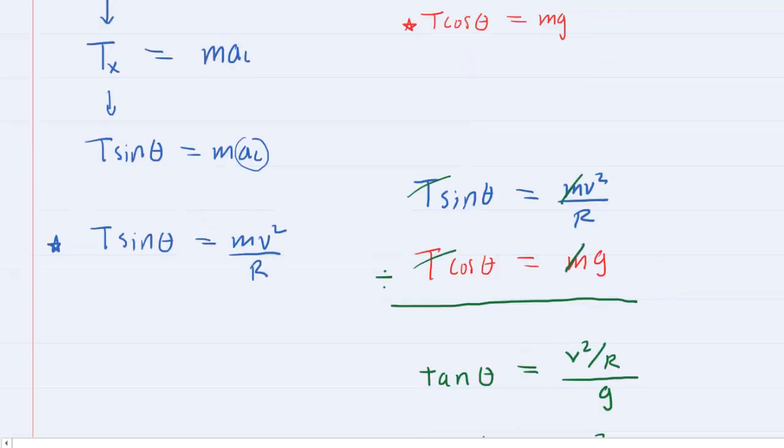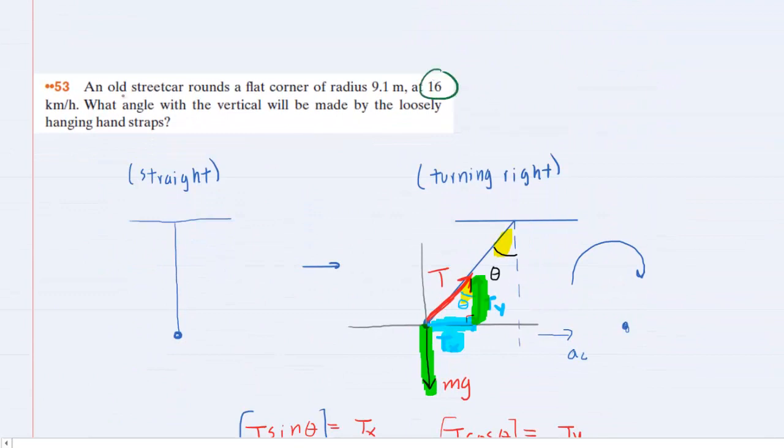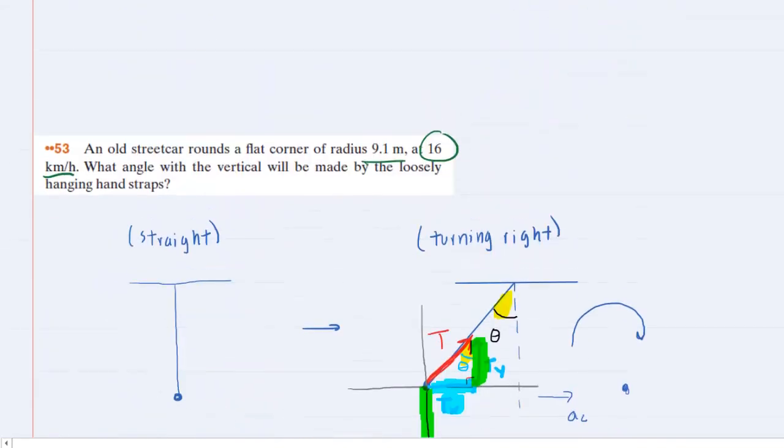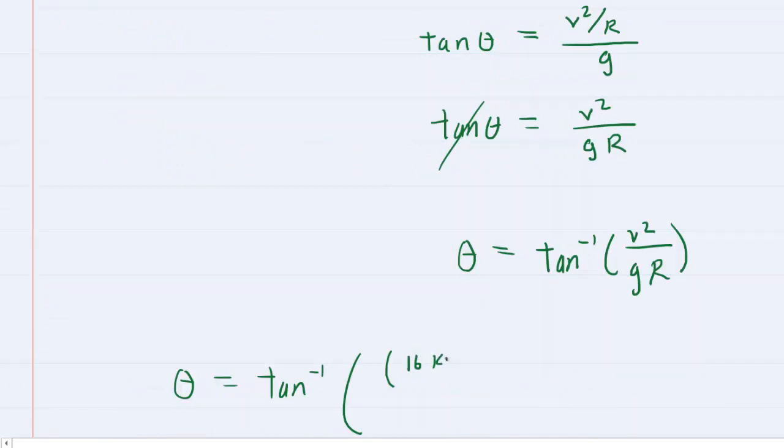Now it's time to plug in the known values. The speed was 16 kilometers per hour, so we need to make a conversion. The radius is 9.1 meters. To convert the speed carefully: 16 kilometers over 1 hour, multiplied by 1 kilometer equals 1,000 meters so the kilometers cancel, then multiply by 1 hour equals 3,600 seconds so the hours cancel, giving meters per second. Don't forget the speed is squared.